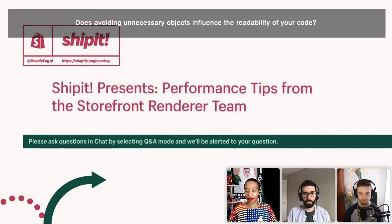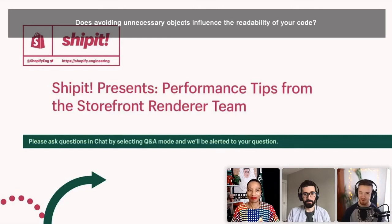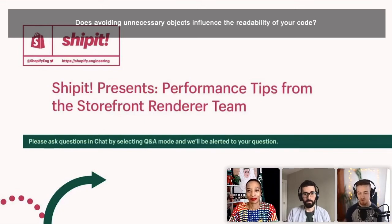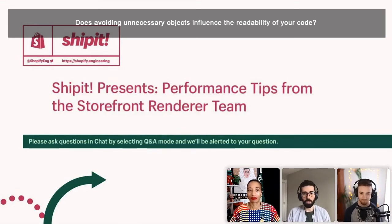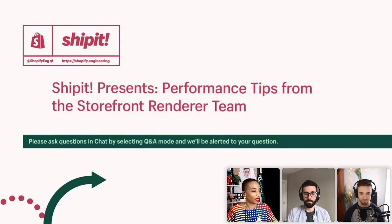On whether avoiding unnecessary objects hurts code readability: no, not significantly. It's a mindset and pattern to get used to — it's not idiomatic textbook Ruby, but it doesn't create spaghetti code. The main changes are using map! instead of map, which adds one extra line to return the modified object, and using constants for empty returns. It doesn't impact readability in a major negative way.